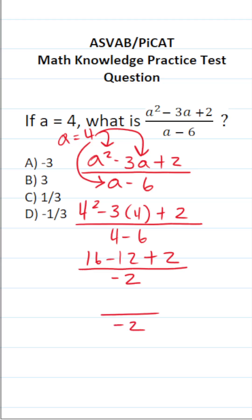Again, our denominator is not going to change. 16 minus 12 is going to be 4. 4 plus 2 is 6. So this becomes 6 over negative 2.